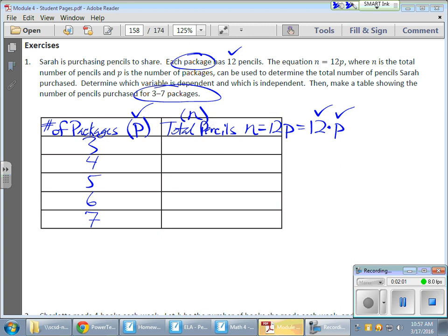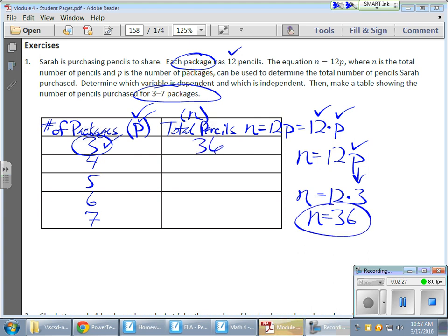We're going to start working here. So three, if I have three packages, I need to then take my formula here or my expression. Here's my n equals 12p, and I'm going to substitute the three for the p. There it is. And this is a multiplication deal, equals n. So n equals 12, 24, 36. There we are, which gives me 36 pencils.